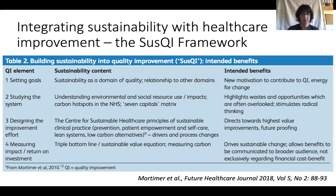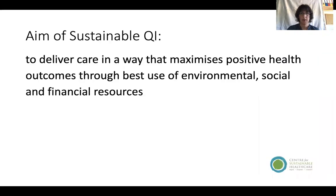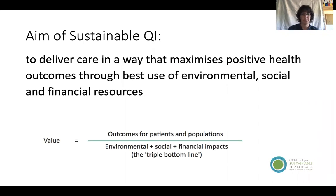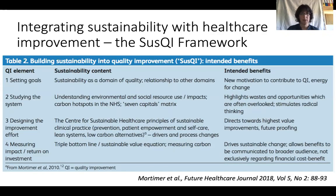When we come to set goals, we would explicitly include sustainability as a goal. The goal of sustainable QI would be to deliver care in a way that maximizes positive health outcomes through best use of environmental, social, and financial resources. In quality improvement, it's really important not to jump to solutions.